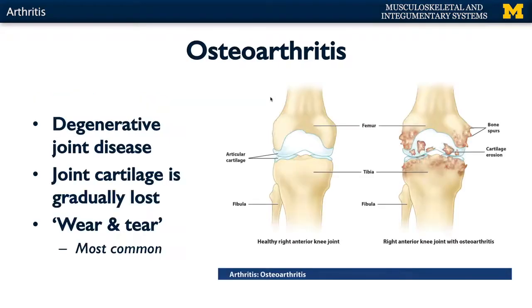The most common type is osteoarthritis. This is the wear and tear version of arthritis, typically found in older individuals. It's an example of a degenerative joint disease. What occurs with osteoarthritis is that the articular cartilage on the ends of the bones is gradually lost, allowing for bone-on-bone contact.